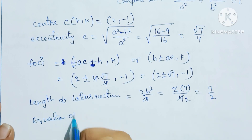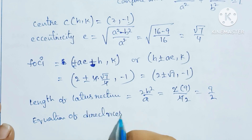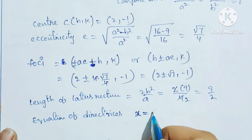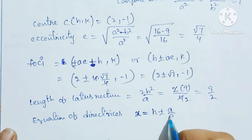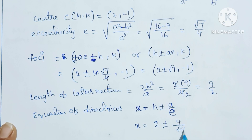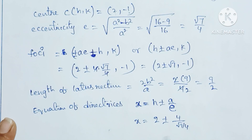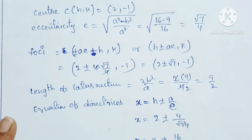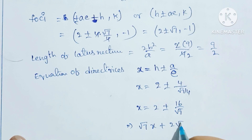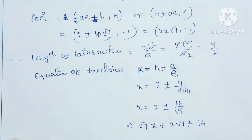Equation of directrix: since the major axis is along x, x = h ± a/e. Substituting h = 2, a = 4, e = √7/4, we get a/e = 4 / (√7/4) = 16/√7. So the equations of the directrices are x = 2 ± 16/√7, which simplifies to x = 2 ± 16/√7, or equivalently √7·x = 2√7 ± 16.